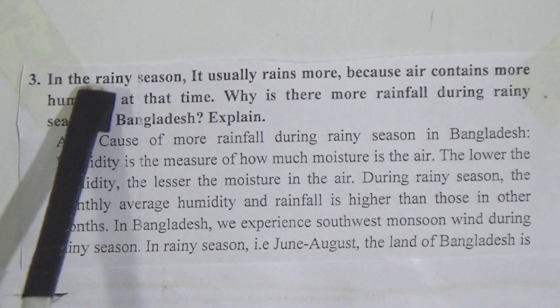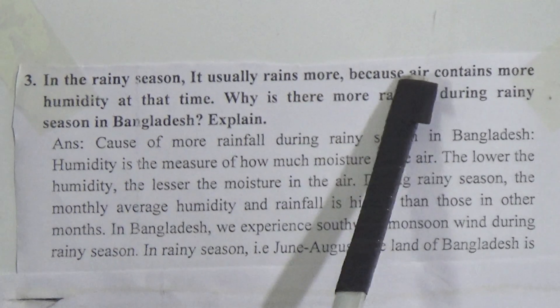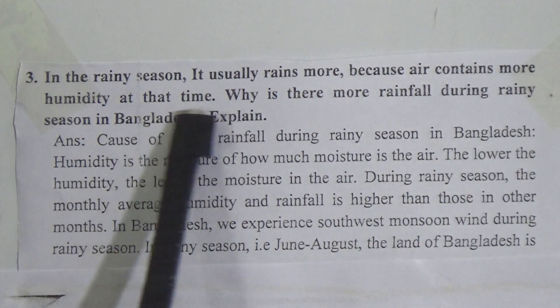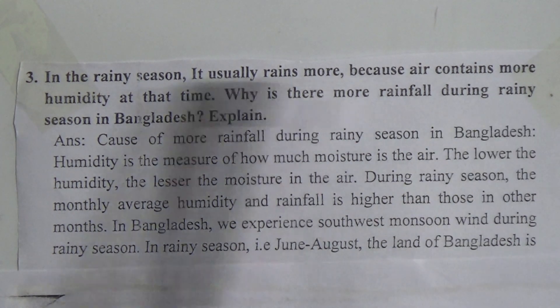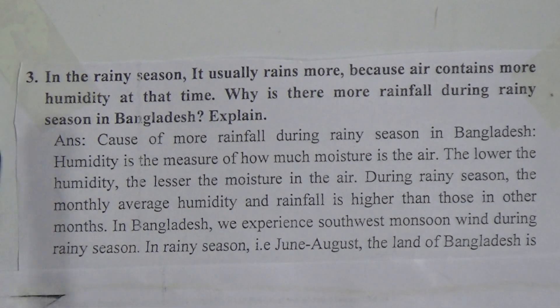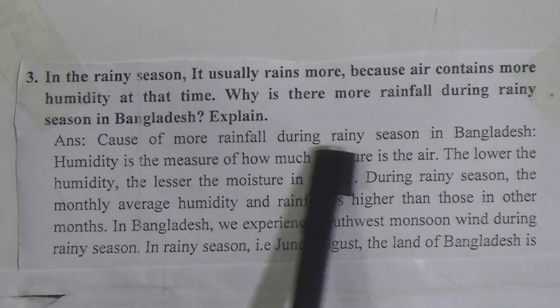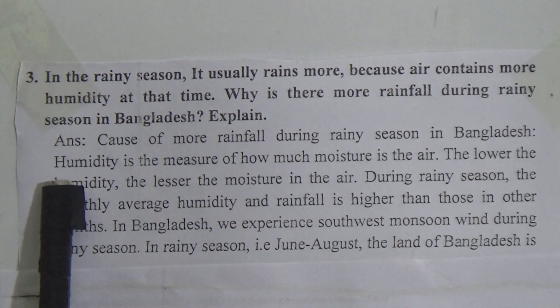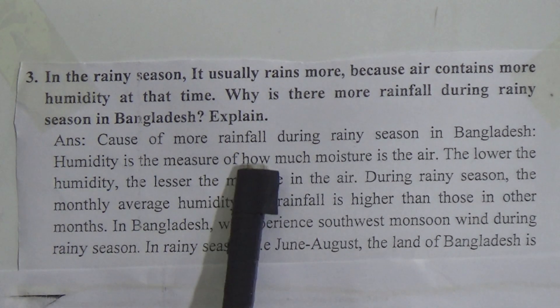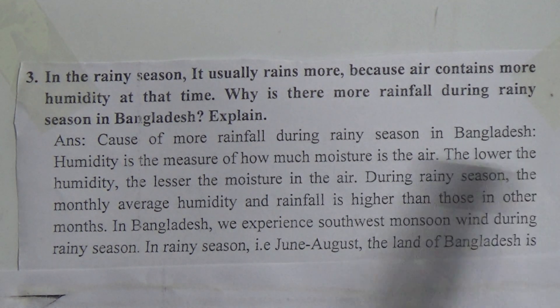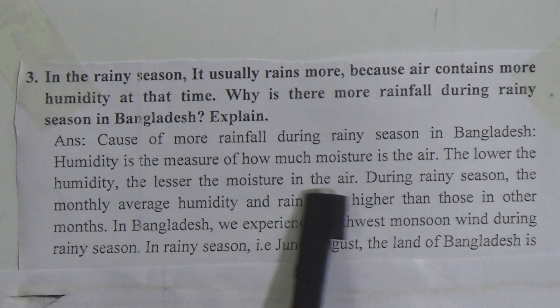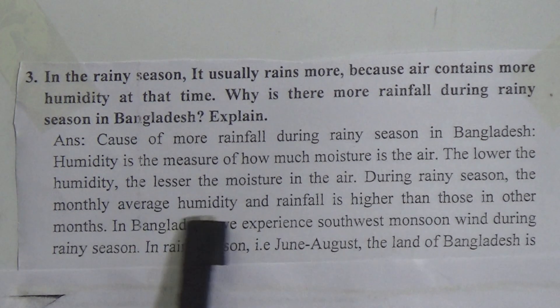Today we will start from competency-based question number 3: In the rainy season it usually rains more because air contains more humidity at that time. Why is there more rainfall during rainy season in Bangladesh? The answer: Cause of more rainfall during rainy season in Bangladesh. Humidity is a measure of how much moisture is in the air; the lower the humidity, the lesser the moisture in the air.